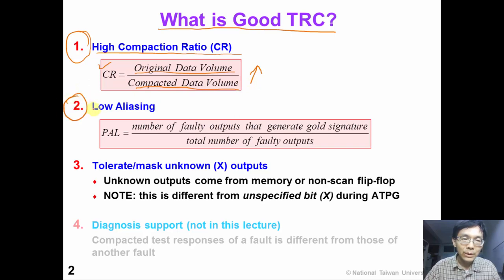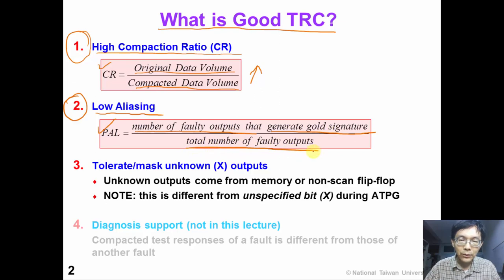The second requirement is that the compactor must have very low aliasing. We define the PAL — probability of aliasing — as the number of faulty outputs that generate a good signature divided by the total number of faulty outputs. When this number is low, then we have little fault coverage loss.